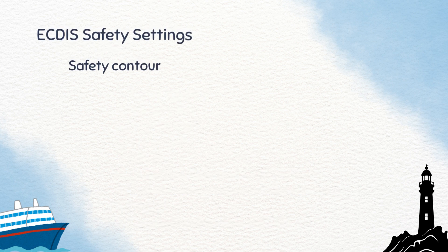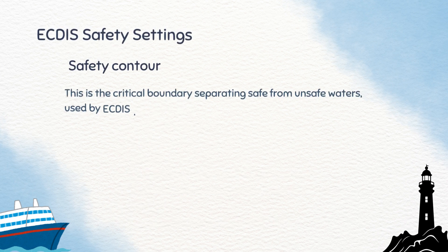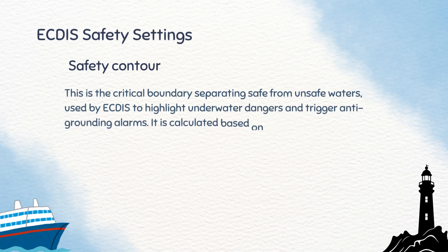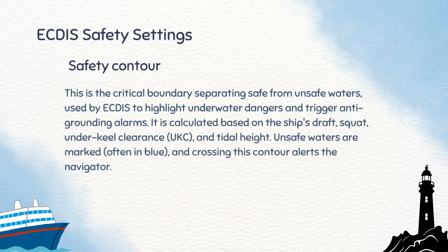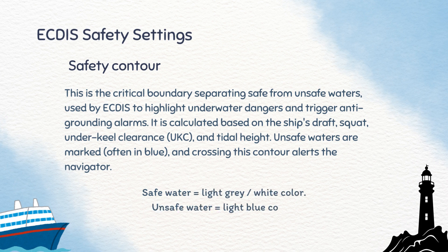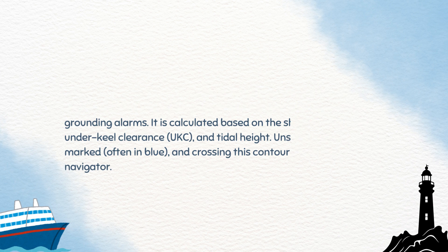The safety contour is the critical boundary between safe and unsafe waters. It is calculated using the ship's draft, squat, underkeel clearance, and tidal height. On the chart, safe water is shown light gray or white, and unsafe water appears light blue. The formula is: draft plus squat plus UKC minus height of tide.